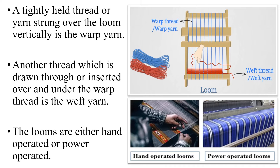A tightly held thread or yarn strung over the loom vertically is the warp thread or warp yarn. Another thread which is drawn through or inserted over and under the warp thread is the weft thread or weft yarn. With the weft thread, it is possible to create different patterns and designs in the weave, and therefore different designs in the fabrics. Looms are either hand operated or power operated.